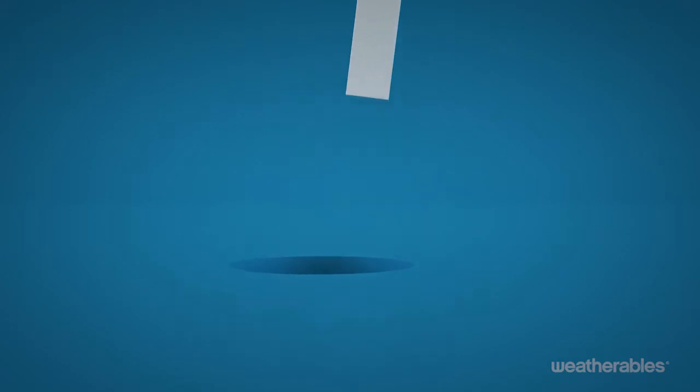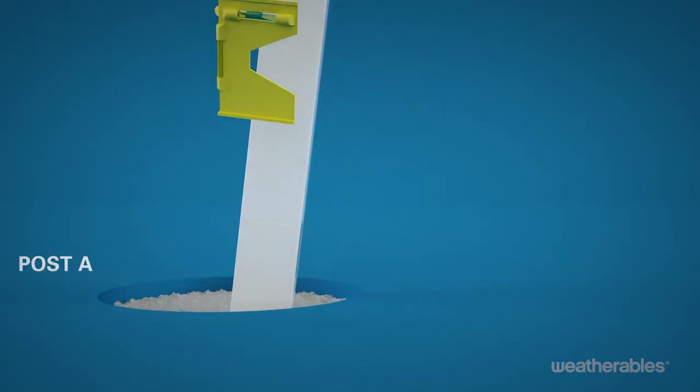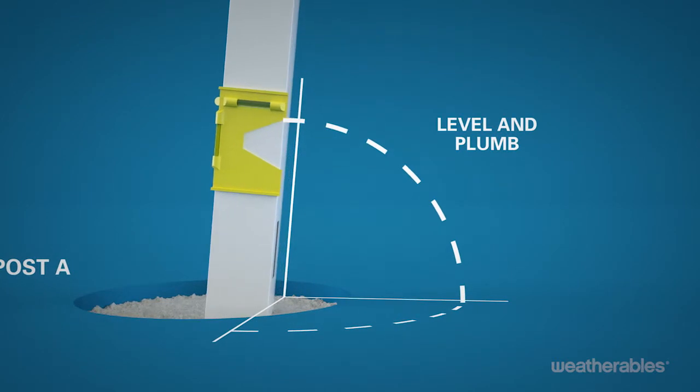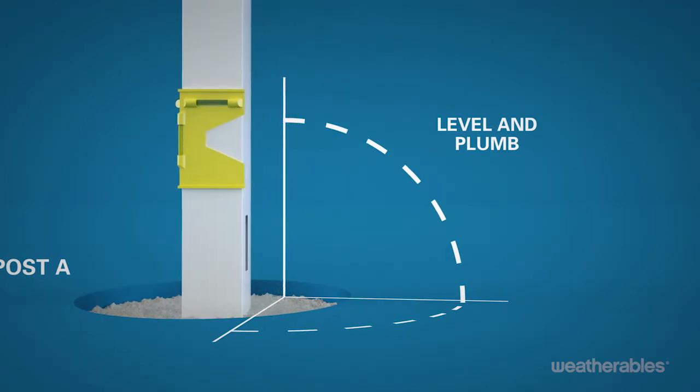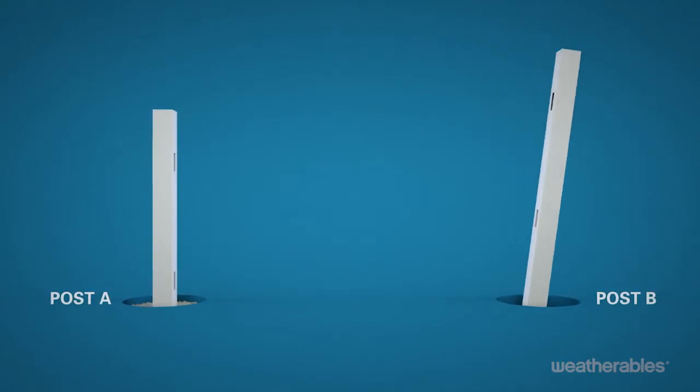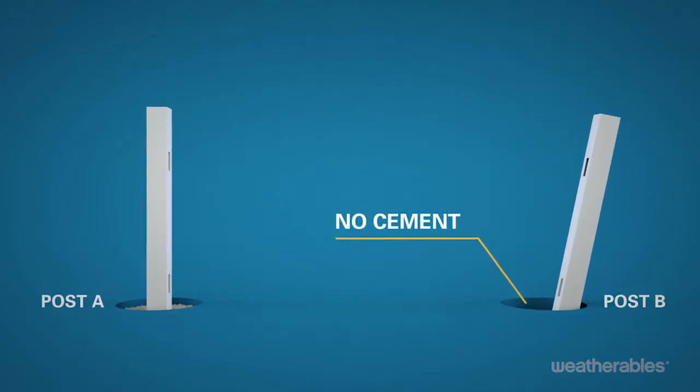Now you can start by installing post A in the first hole with concrete around the post. Be sure to level and plumb this post for proper placement. It's important to have post B sitting in the adjacent hole but not cemented so you can assess alignment.